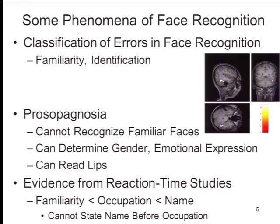Evidence from careful testing of prosopagnosic patients tells us something about face recognition processes. With neurologically normal individuals, typically college students brought into the laboratory for facial recognition tasks, we look for errors and reaction times. One of the interesting findings from these reaction time studies is that it takes people less time to recognize a face as familiar than to attach an occupation to the name, and less time to attach an occupation than to actually name the person. That has to count as a counterintuitive finding — you'd think people would be faster at naming the face. Individuals basically can't name a face without being able to state the occupation of the person first.